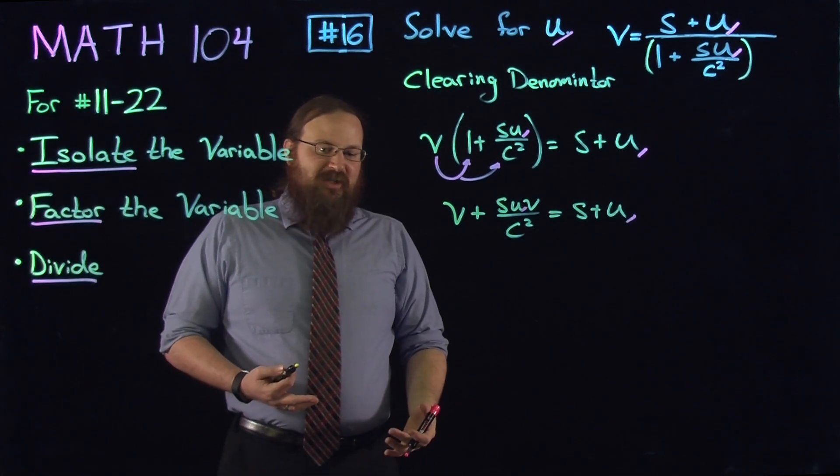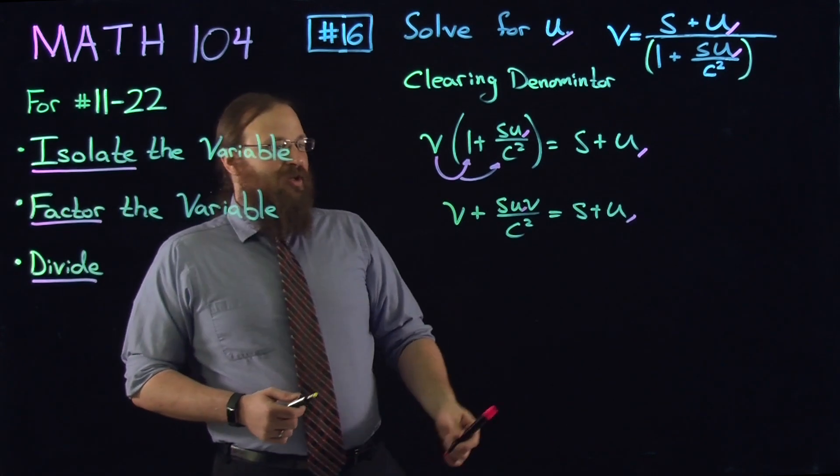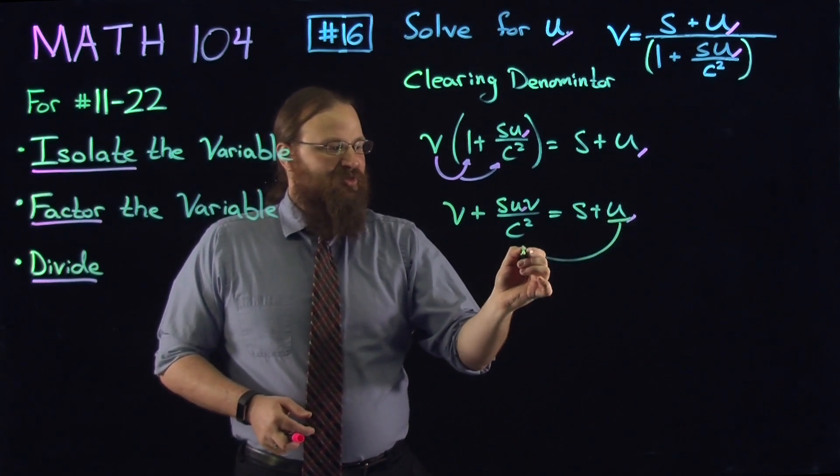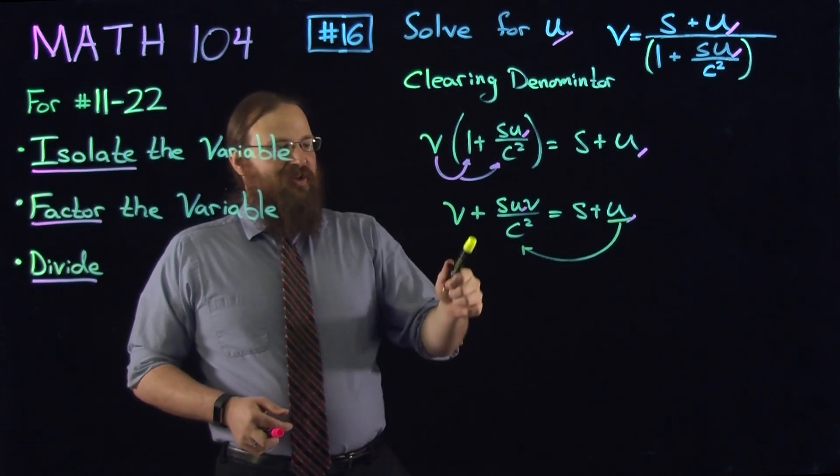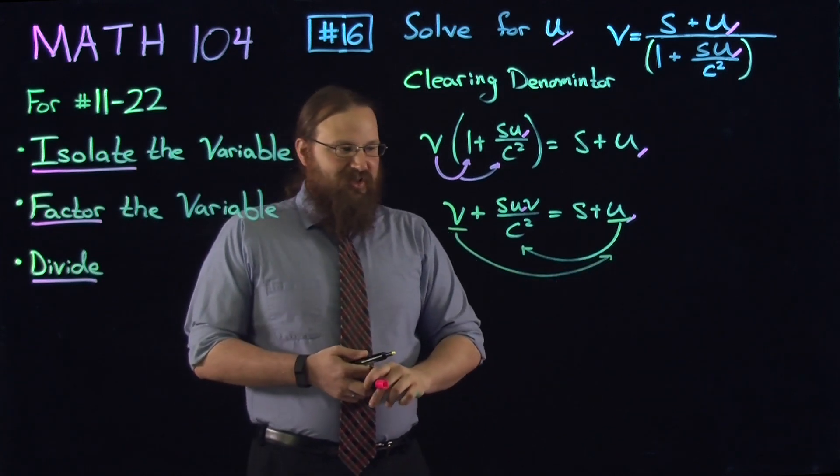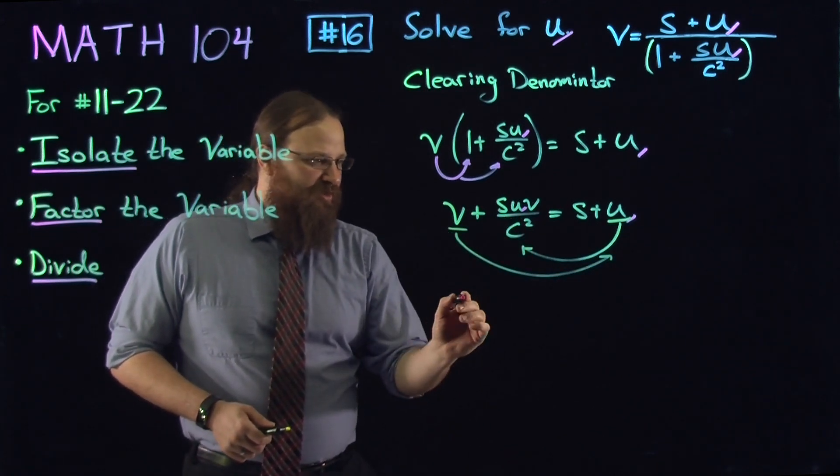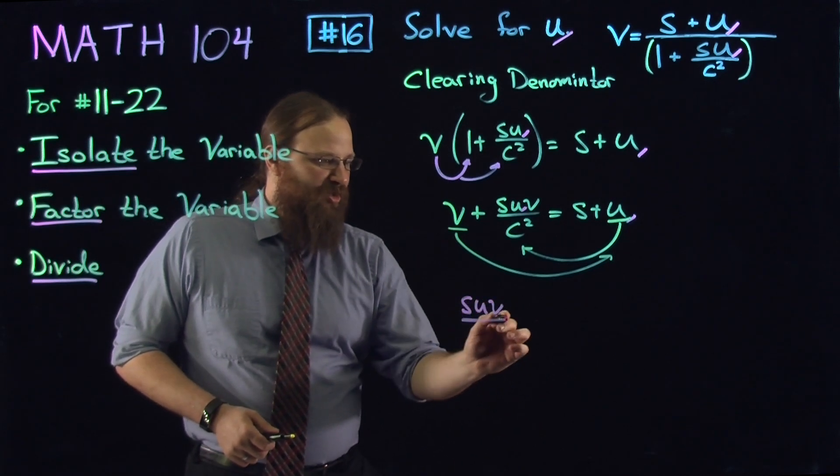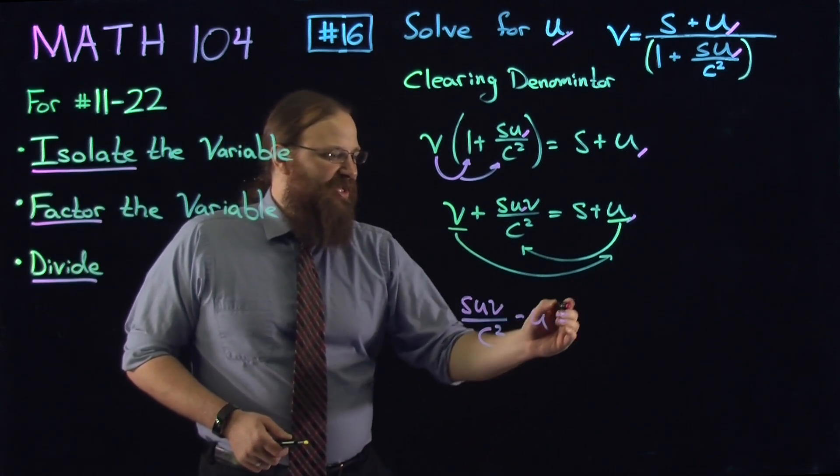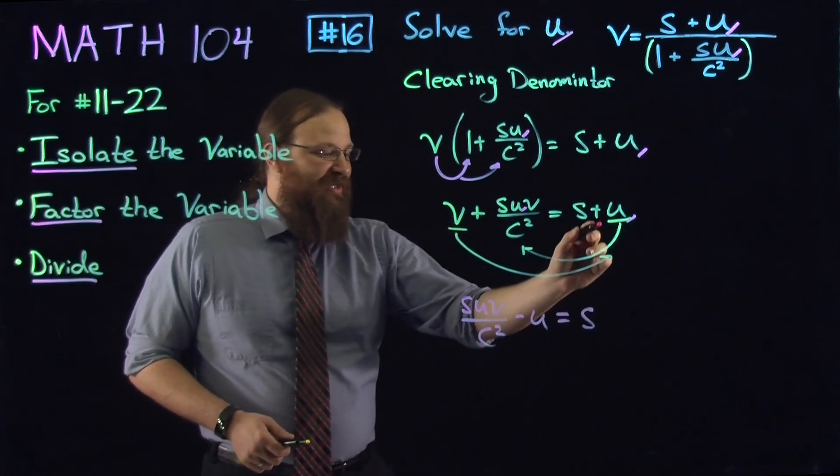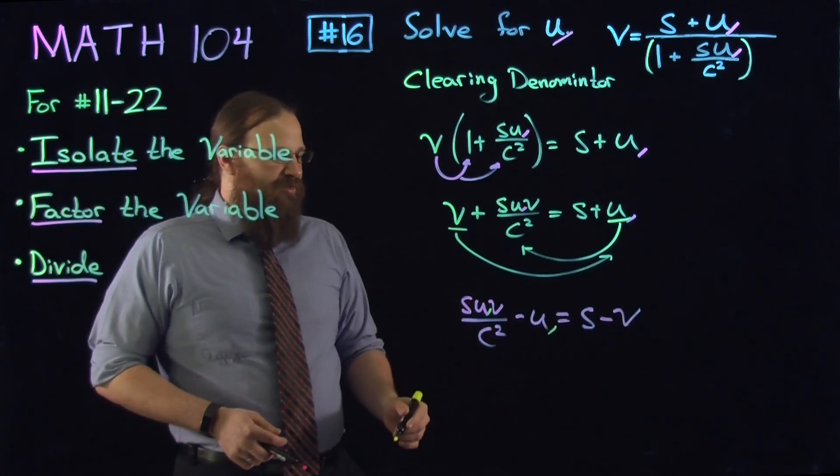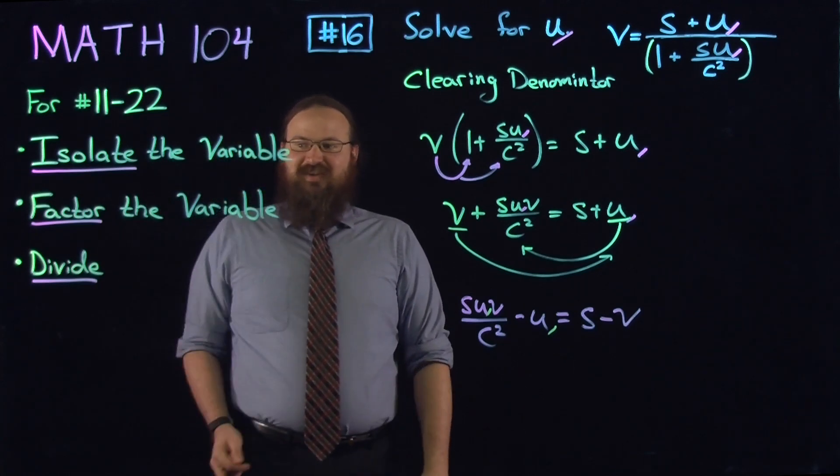We're going to isolate it. That means we're going to put all the terms that have u on one side. We'll put the u on the left-hand side, so we'll take this u term and subtract it to the left-hand side. On the left-hand side, we're going to make sure all the terms are u. This is not u, so we'll subtract it to the right-hand side. That leaves us with suv over c squared minus u on the left. On the right-hand side, we have s minus v.